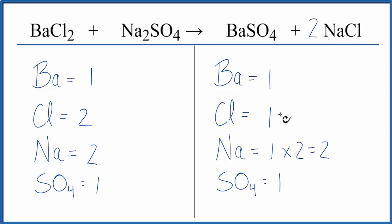1Cl times two, that gives us two, the chlorines are balanced, and we're done. This equation is balanced.